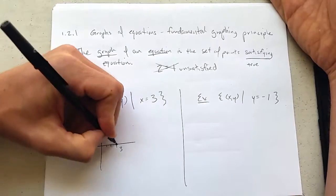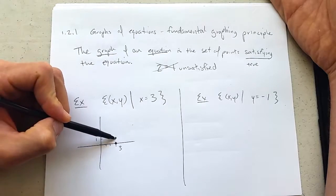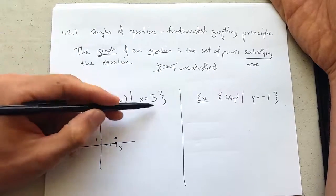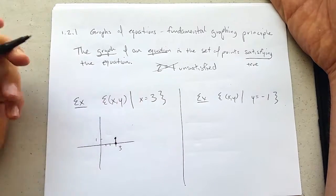Now here's another point that has x-coordinate 3. Y-coordinate can be anything. So I just chose y to be 1. There's no limitations on the y.